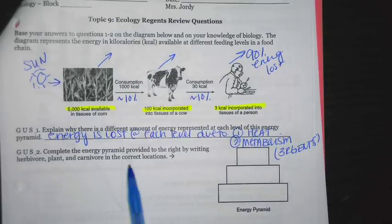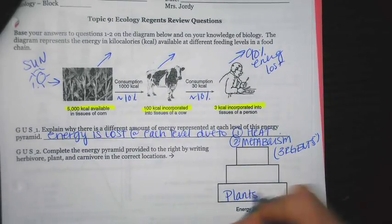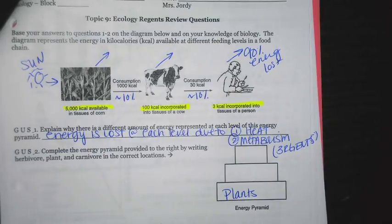Complete the energy pyramid provided to the right by writing herbivore, plant, and carnivore. On the bottom, those are going to be plants, things like algae, grass, trees, bushes.